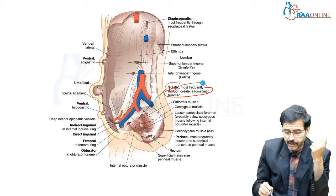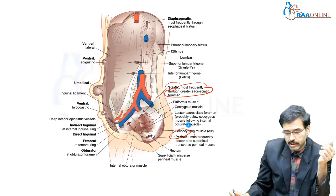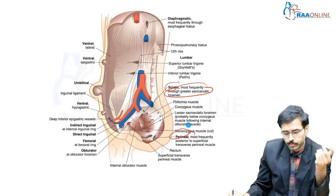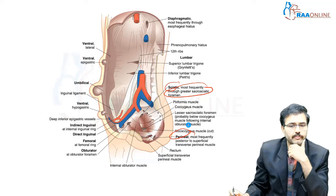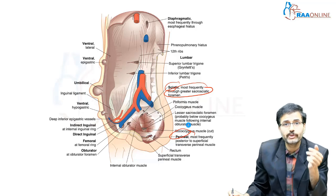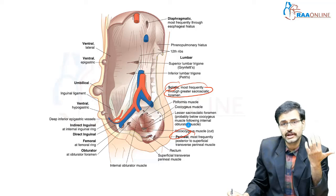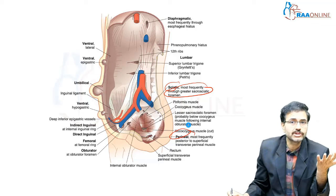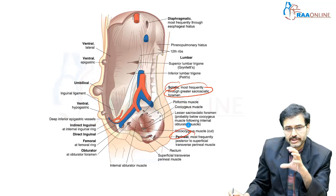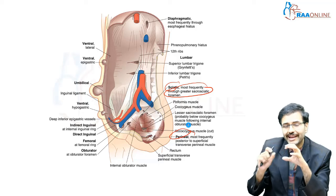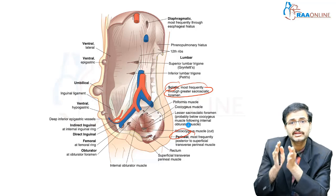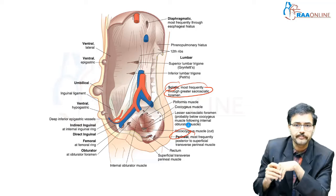Similarly, a perineal hernia most frequently occurs posterior to the superficial transverse perineal muscle. These are some of the rarer hernias which we may not encounter commonly, but this picture gives you an idea regarding the exact site or the space through which these hernias occur.